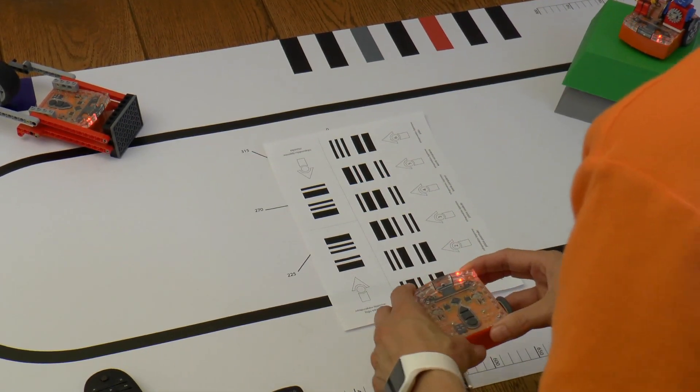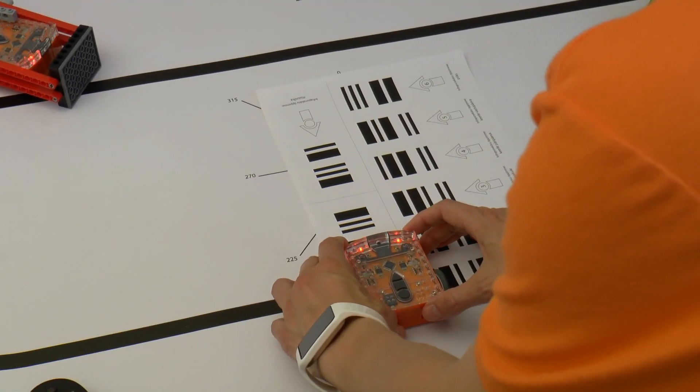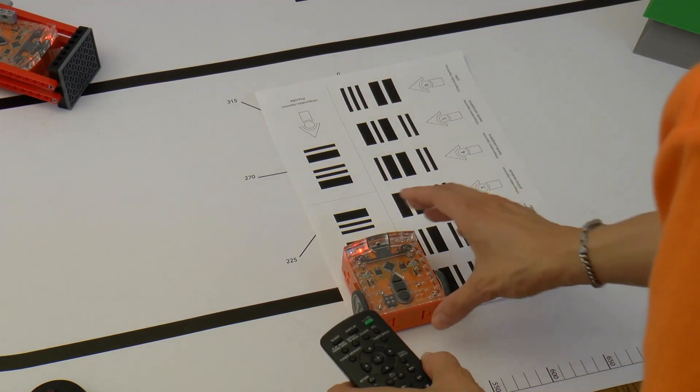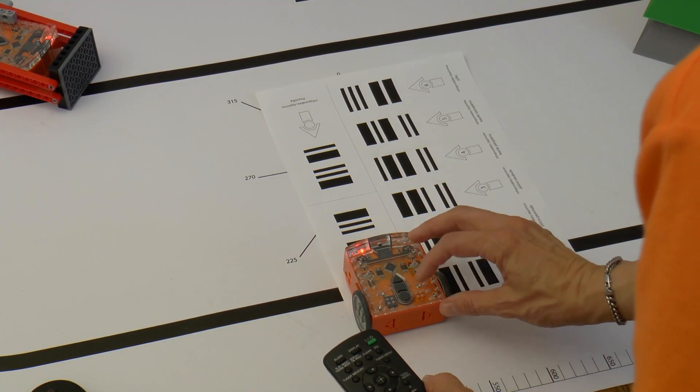The thing you will notice is that the robot will do the same activity that is written next to the barcode, for example, drives forward.